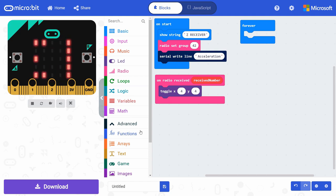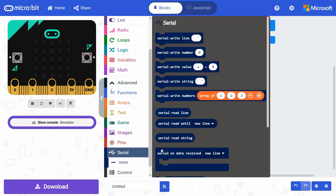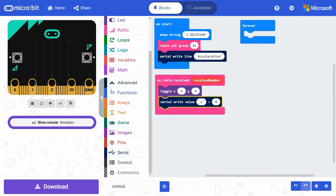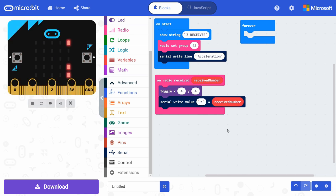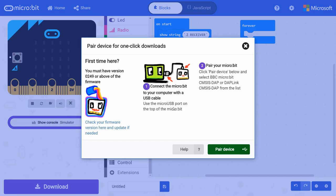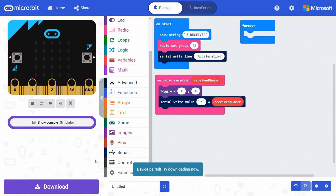Finally, get a serial write value block from serial and snap it under toggle. Change the string to z and drag the received number variable from on radio received to the right side of the serial write value block. If you are launching the rocket in a place that does not have internet connection, you'll likely want to use the MakeCode Windows app or get an internet connection by tethering your phone. In settings, pair your micro bit device and download the code to it.